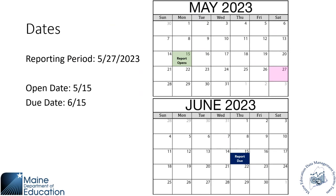This report opens on 5/15 and will be due on 6/15. You won't be able to start certifying until about 6/1. So just keep an eye out, make sure your numbers are correct throughout the end of May, and then at the beginning of June you'll be able to certify.